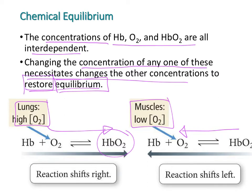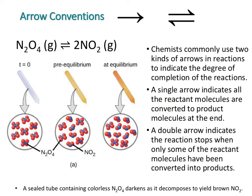That's the main idea of this chapter, and everything you learn from here on is relevant to that. You will commonly see a double-headed arrow showing that a reaction can go forward and backward.